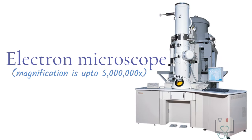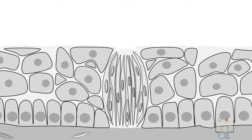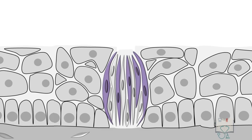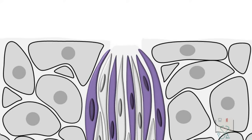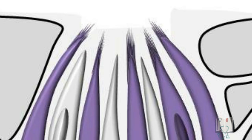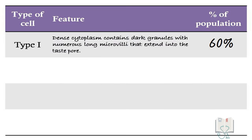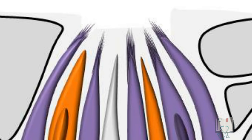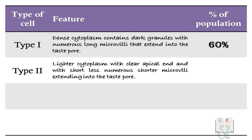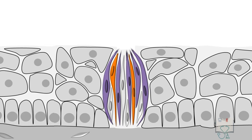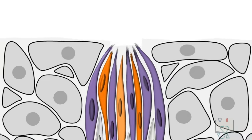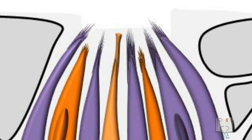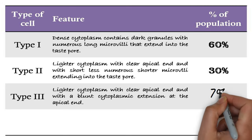However, when seen under an electron microscope, taste buds appear to have four types of cells. Type 1 cells have electron-dense cytoplasm containing dark granules and numerous long microvilli extending into the taste pore; they form 60% of the cells. Type 2 cells have lighter cytoplasm with a clear apical end and less numerous shorter microvilli, forming 30% of all cells. Type 3 cells are similar to Type 2 in appearance but have a blunt extension at their apical end instead of microvilli, forming 7% of all cells.